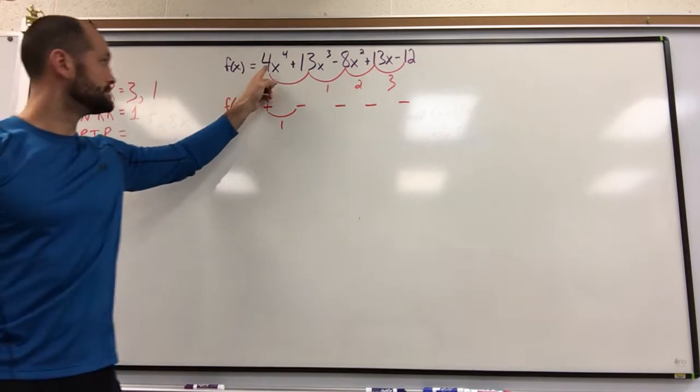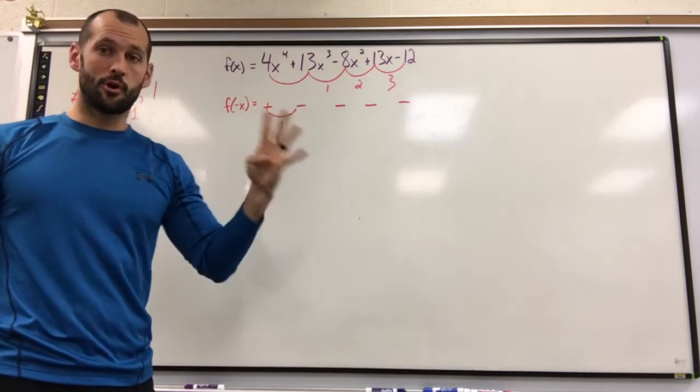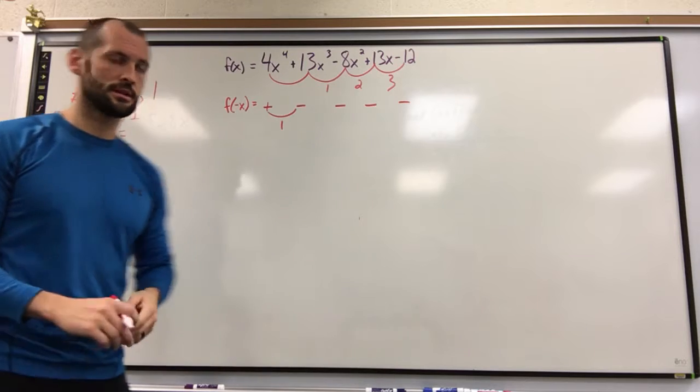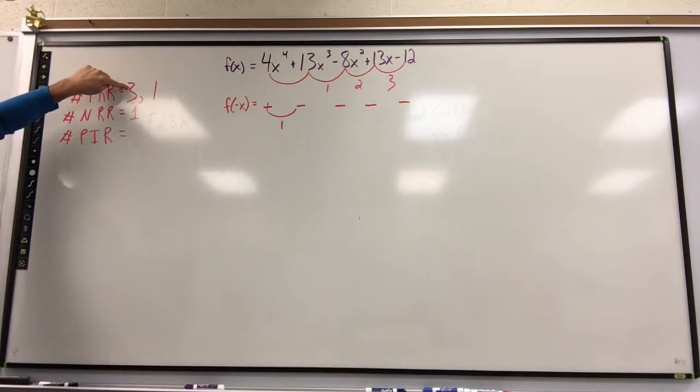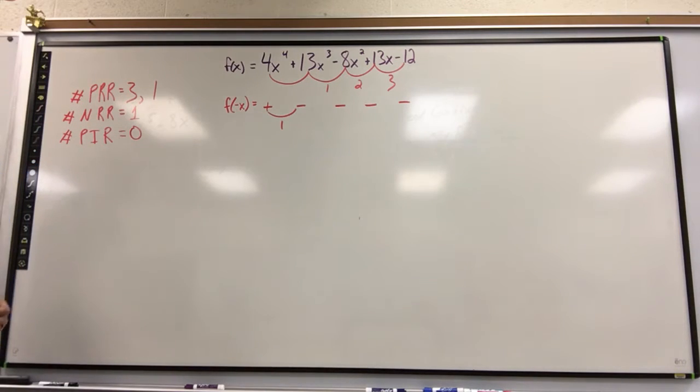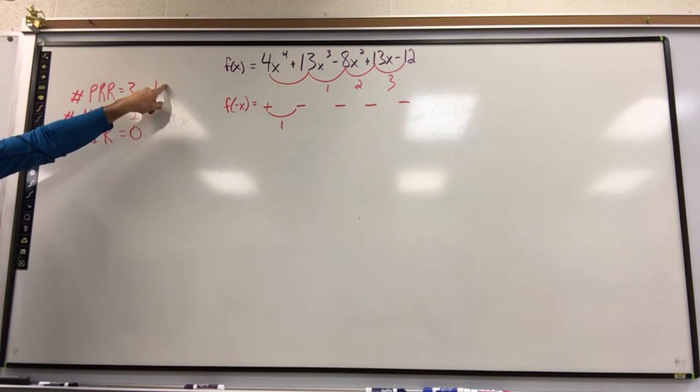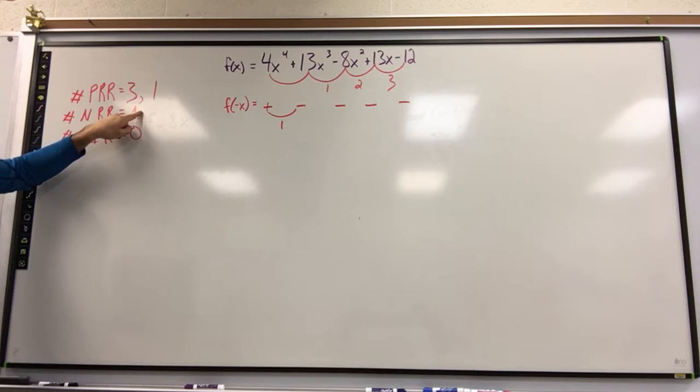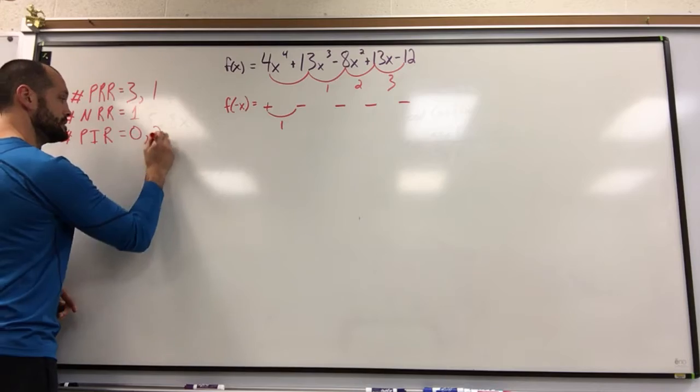Well, look at your highest degree. There's four potential roots here. So run our scenarios. If I had three positives and one negative, that's four, so there are no imaginaries in that scenario. Run your other scenario. If you have one positive and one negative, that means there's two left.